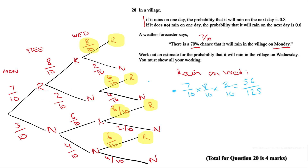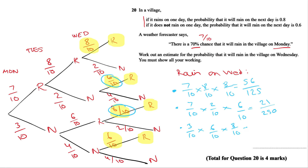The next path is rain, not rain, rain. So 7 tenths multiplied by 2 tenths multiplied by 6 tenths gives 21 over 250. For not rain, rain, rain: 3 tenths multiplied by 6 tenths multiplied by 8 tenths gives 18 over 125. And finally, not rain, not rain, rain: 3 tenths multiplied by 4 tenths multiplied by 6 tenths gives 9 over 125.